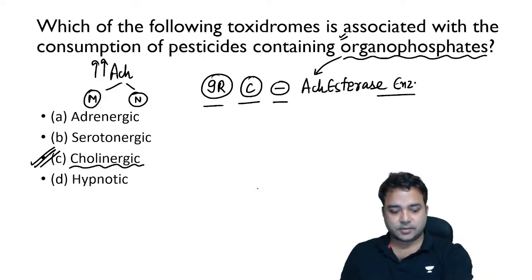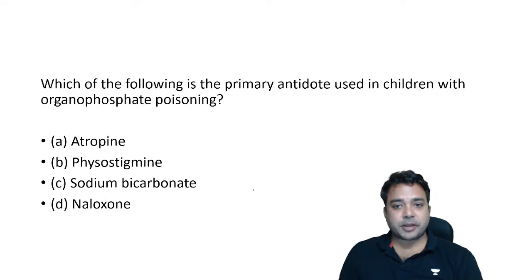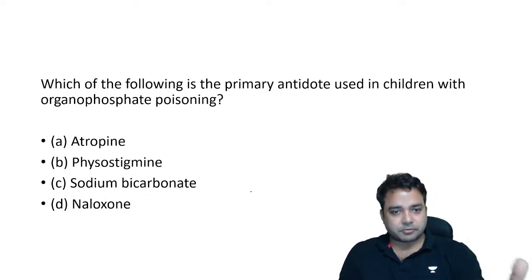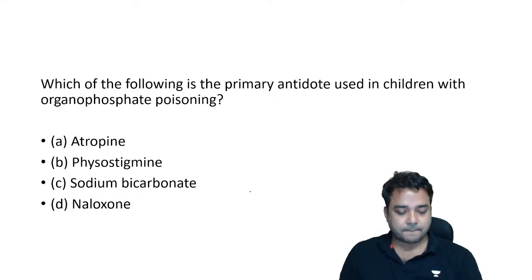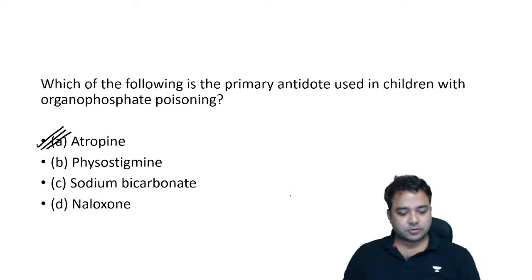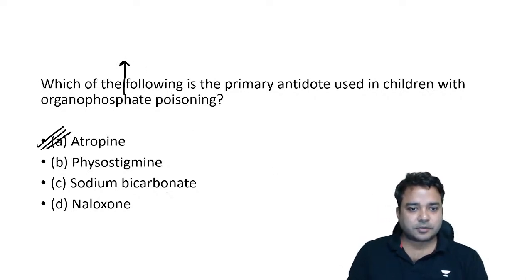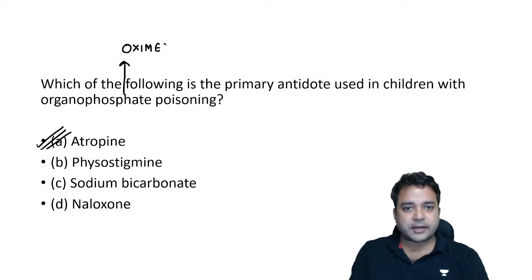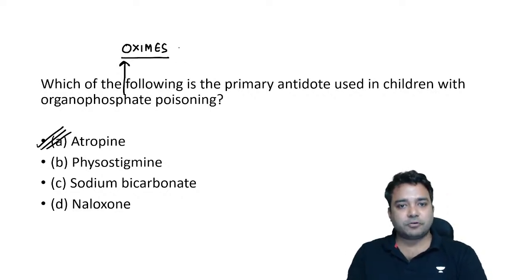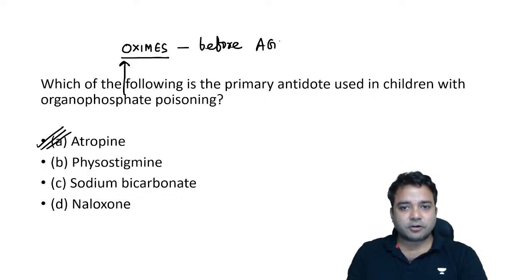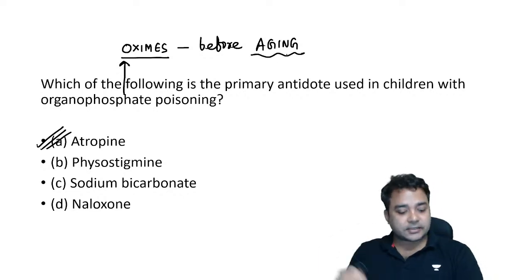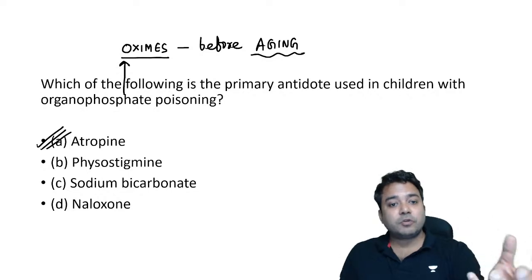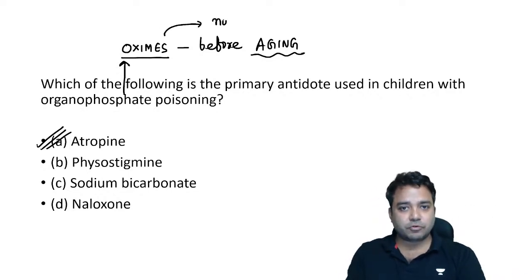The primary antidote used in OPC poisoning is atropine. Along with atropine, oximes like pralidoxime, obidoxime, and diacetyl monoxime have a role if given before aging of the enzyme occurs. They are not useful after aging of the enzyme. Oximes have no role in carbamate poisoning — this is important to remember.